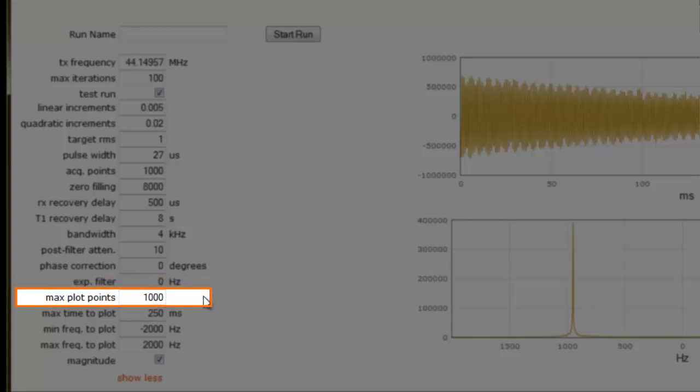The number of points we'll plot is 1000. This is equal to the number of points we're going to acquire. And since we're looking at 1000 points out of a 4 kHz bandwidth, the time of the FID we can acquire is 250 milliseconds.